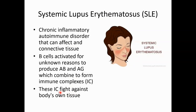These immune complexes become abundant and start to fight the body's own tissue by depositing themselves. Typically for lupus, the heart, vessels, lungs, skin, and joints — anything that has connective tissue — can be affected, and those complexes fight the body wherever they are deposited.